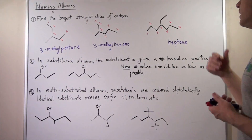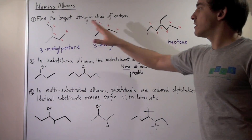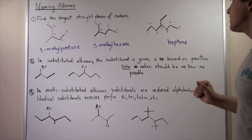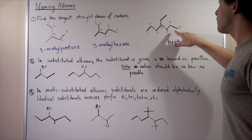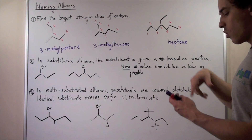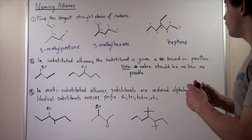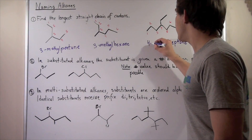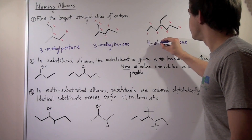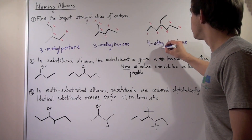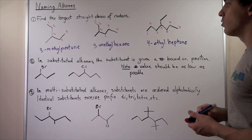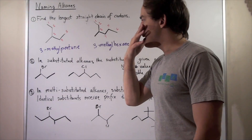In the last example, this one also has symmetry down the middle, so it doesn't matter if we begin from either end — both give position four. Now we have not a methyl but an ethyl group, because the substituent has two carbons. So that concludes these examples.